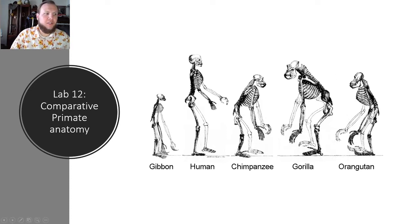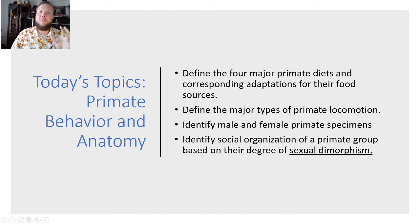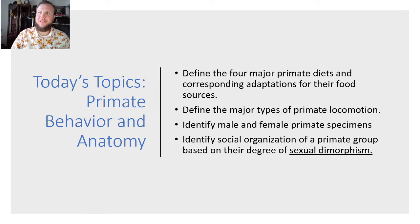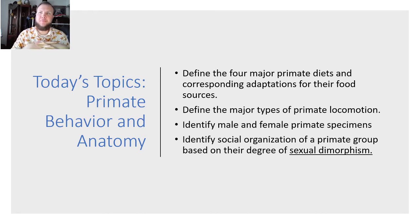First we're going to define four major primate diets and the adaptations that correspond to them. Then we're going to define the major types of primate locomotion, identify male and female primate specimens and sexual dimorphism, and identify social organization of a primate group based on the degree of sexual dimorphism — why some primates are more sexually dimorphic than others.